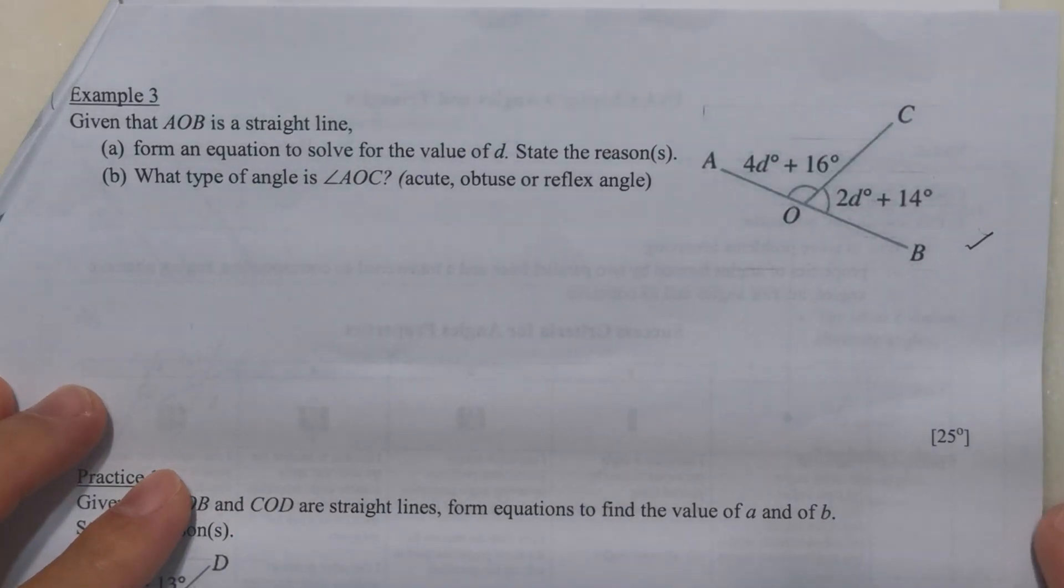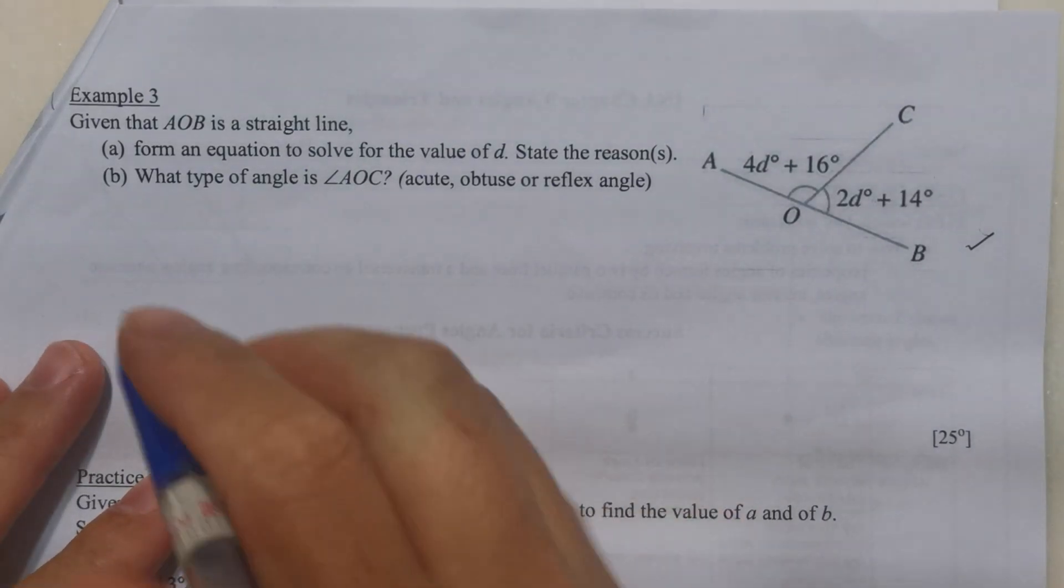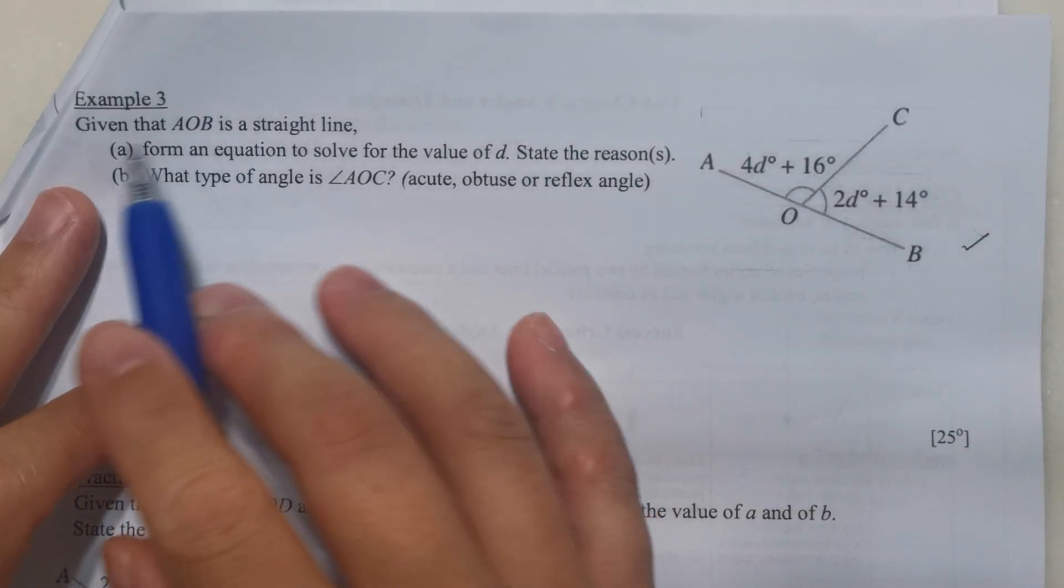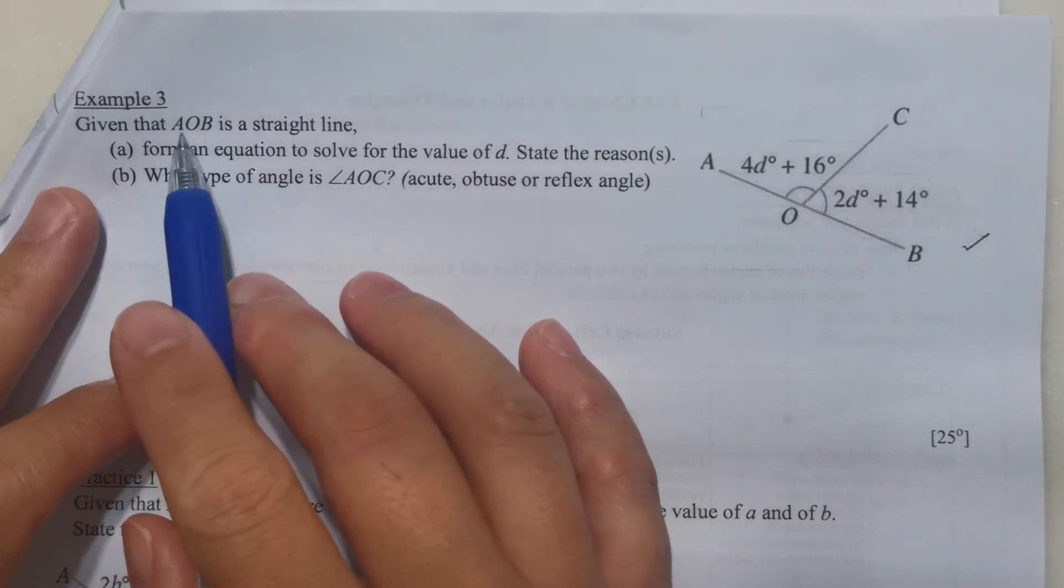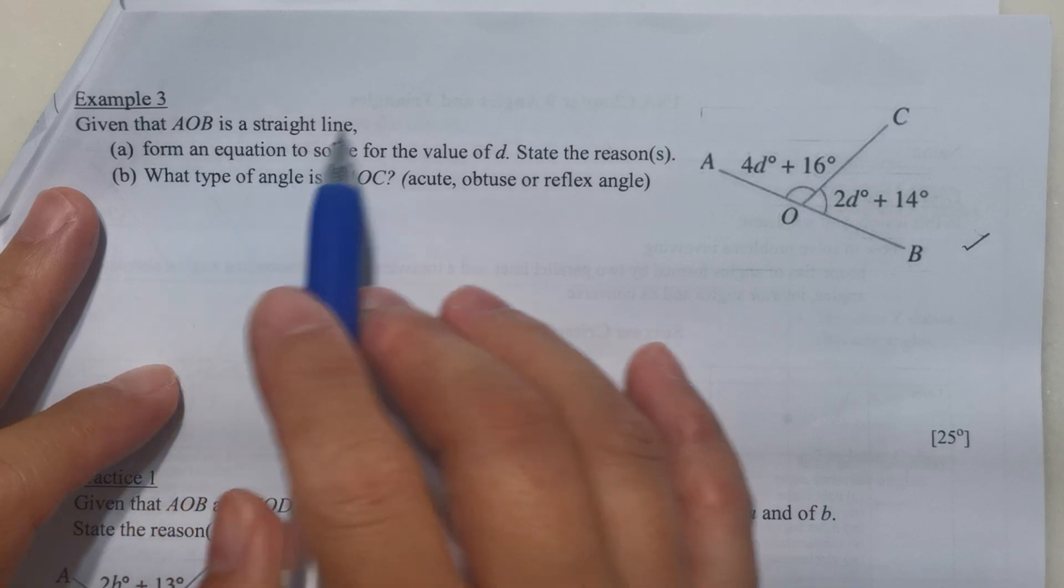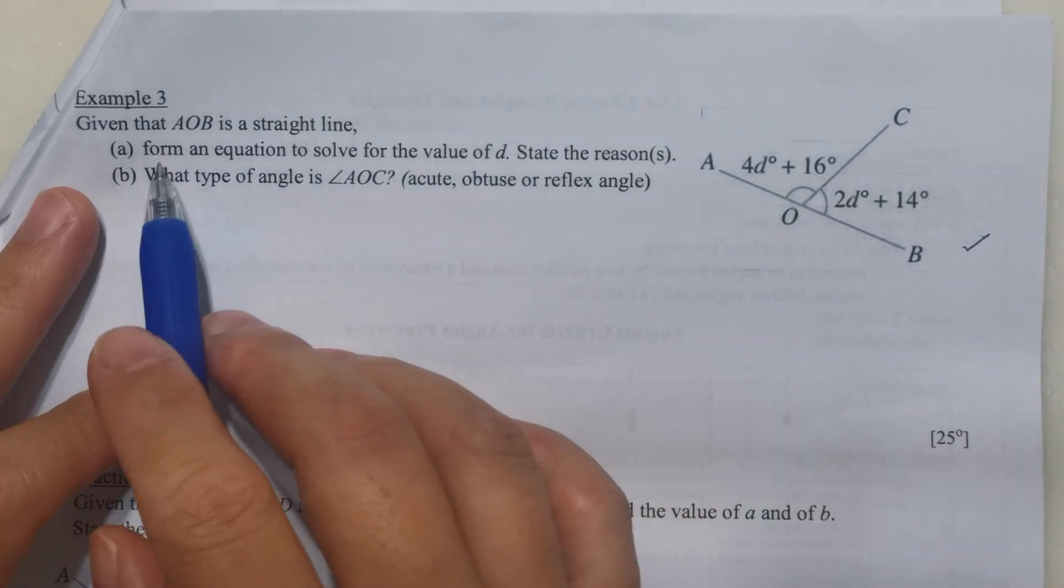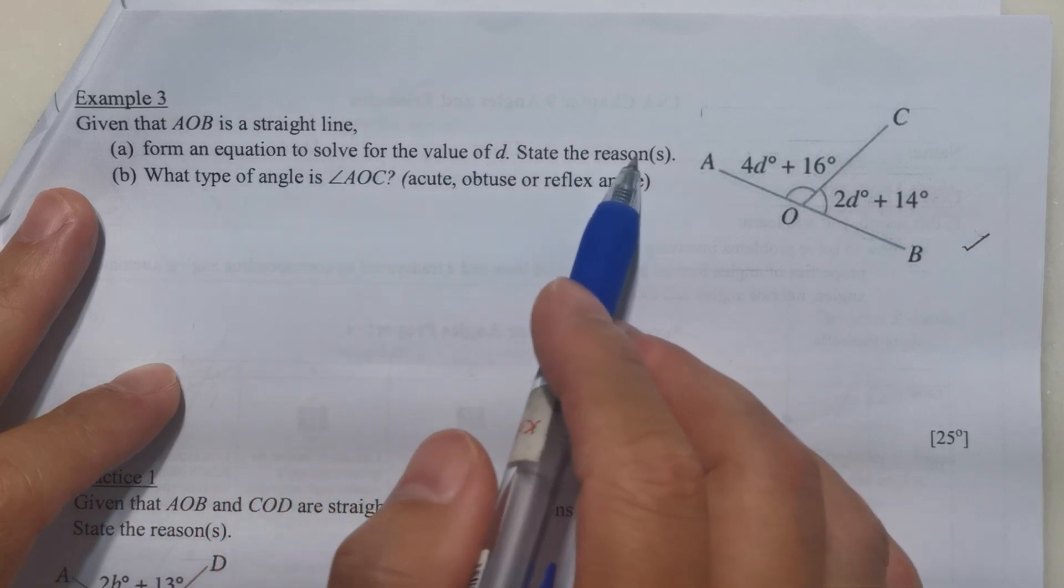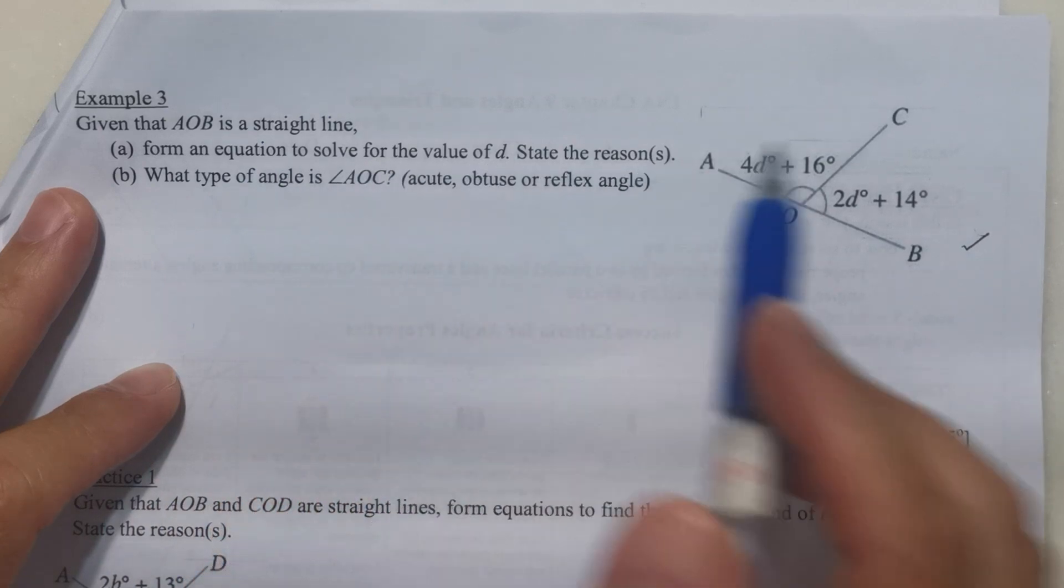For example 3 of page 3, we are given that angle AOB is a straight line.